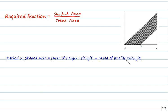Another method by which shaded area can be calculated is area of larger triangle minus area of smaller triangle. So this is the larger triangle we are talking about and this is the smaller triangle.